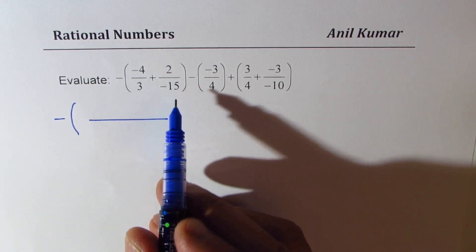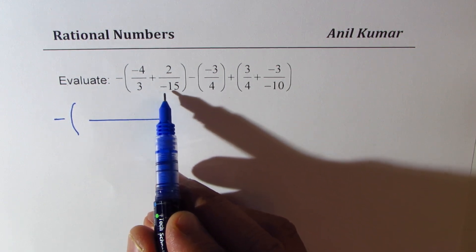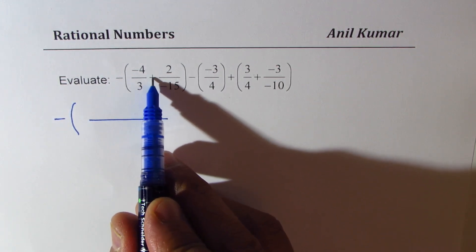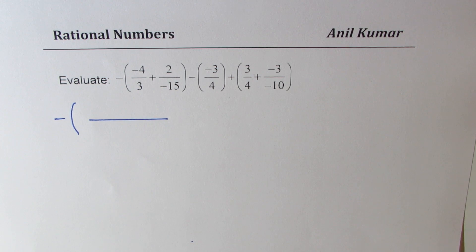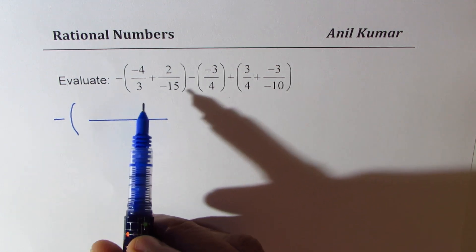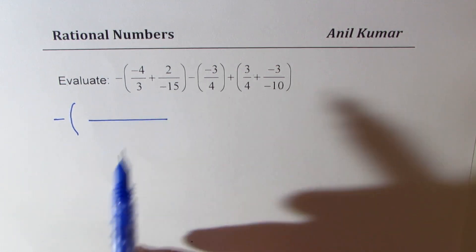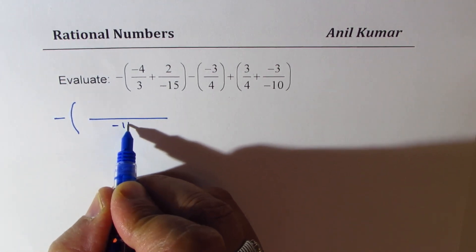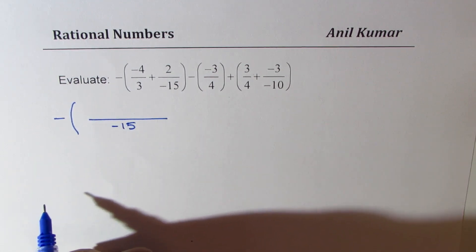You could actually take care of this sign and make this positive as negative 15. You could do that also. So, there are a couple of ways in which it could be done. So, first step, let's keep minus 15 as our common denominator.